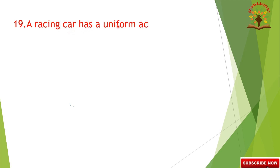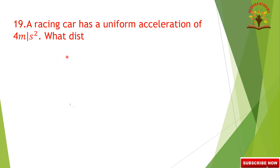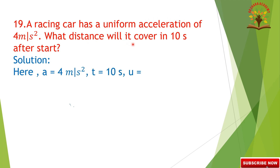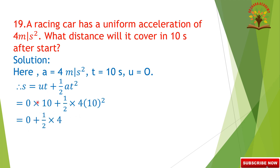Question 19: A racing car has a uniform acceleration of 4 meters per second square. What distance will it cover in 10 seconds after start? Given acceleration 4 meters per second square, time 10 seconds, U equals 0. Using S equals UT plus half AT square: S equals 0 plus half into 4 into 100, so S equals 200 meters.